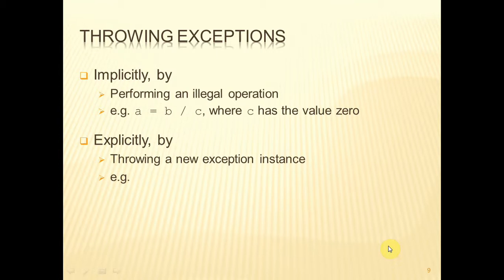This will be detected by the runtime environment, and the exception will be thrown by the runtime environment. Or we could do this explicitly. Perhaps we have detected some kind of error situation that we, in our program, can't deal with, and therefore we can explicitly throw a new instance of some exception or other.